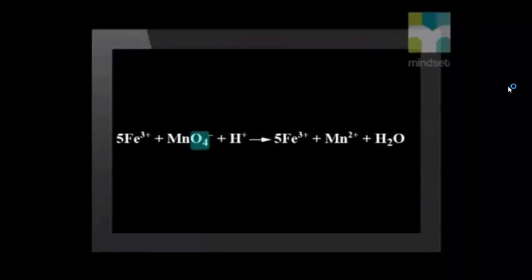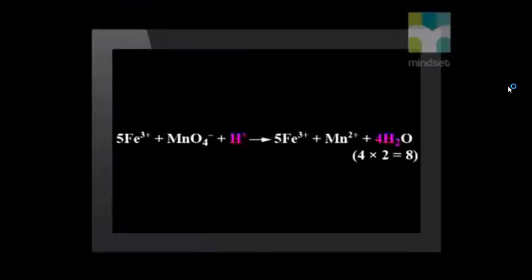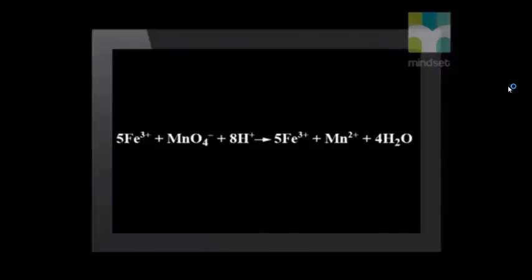Now we can add the half equations. The next step is to add water molecules to balance the oxygen atoms. We can see that we have 4 oxygen atoms on the left side and only 1 oxygen atom on the right, so we multiply the water on the product side by 4. When we change the number of water molecules on the right side, we also affect the number of hydrogen atoms. We now have 1 hydrogen on the left-hand side but 8 on the right.